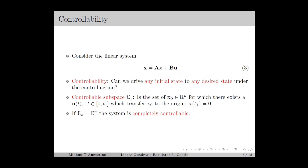Therefore, the system is said to be completely controllable if any initial state x0 can be transferred to the origin in finite time using a finite control input u(t), where t belongs to the closed interval 0 to t1. We can also define controllability using the concept of the controllable subspace, which we denote as the set Cs. The set Cs consists of the initial states x0 in R^n which can be transferred to the origin in finite time using a finite control action. The system is said to be completely controllable if the set Cs equals R^n.